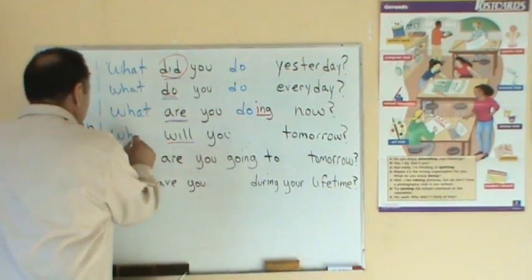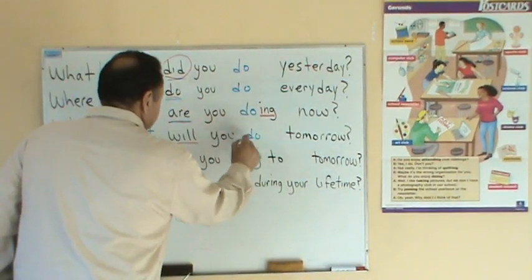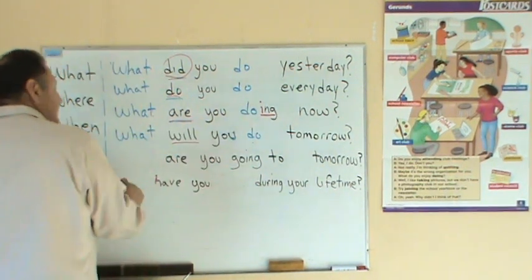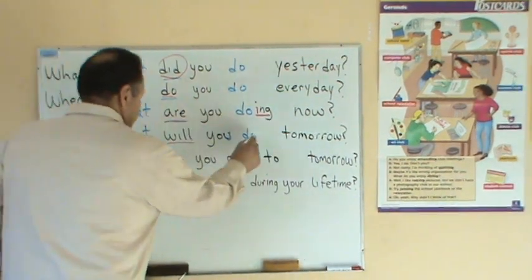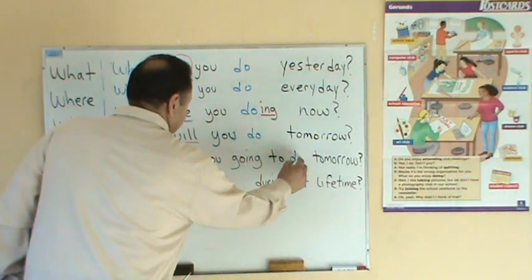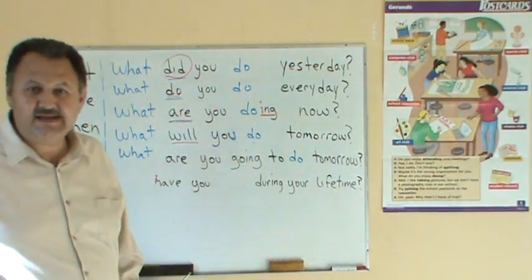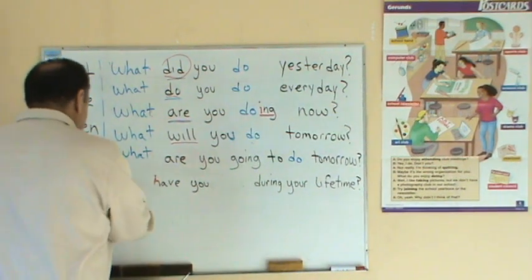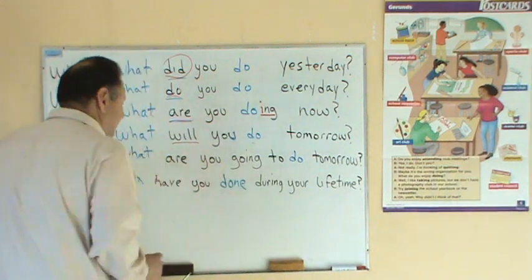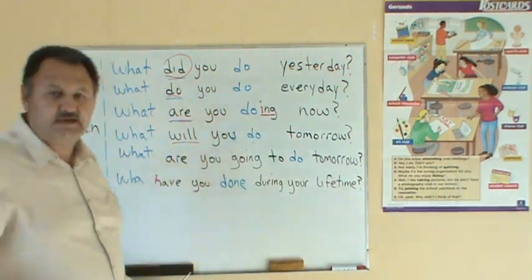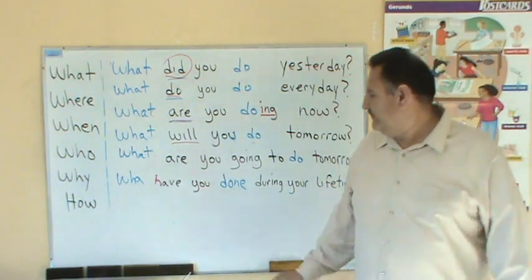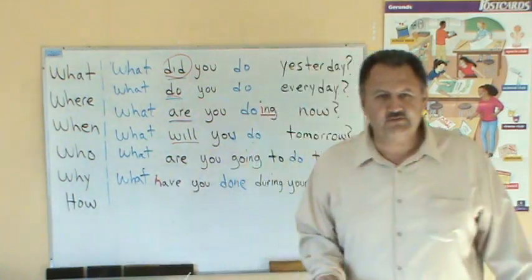What will you do tomorrow? — ¿Qué harás mañana? What are you going to do tomorrow? — ¿Qué vas a hacer mañana? And what have you done — en participio o presente perfecto. What have you done during your lifetime?